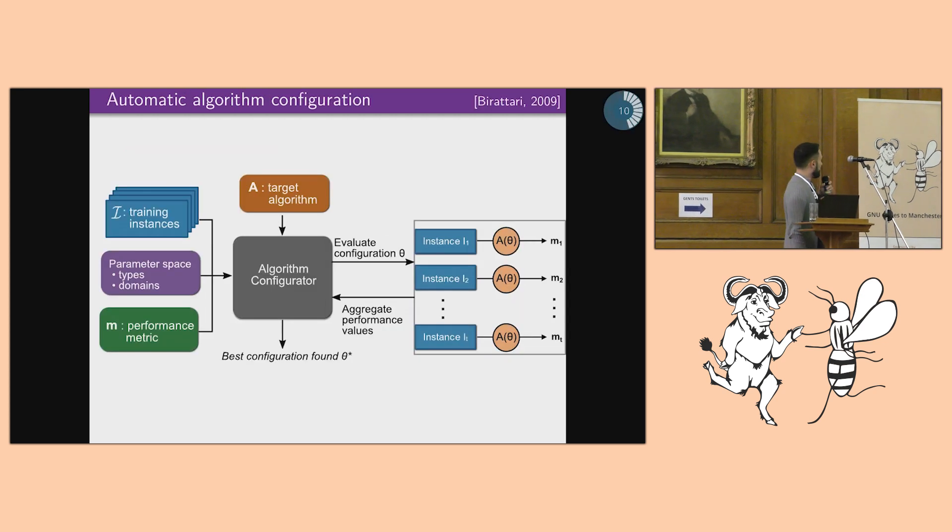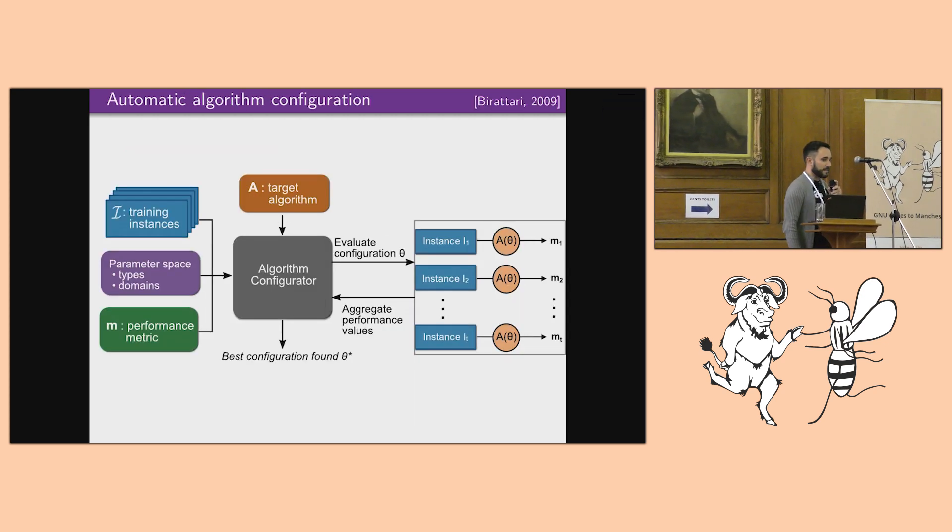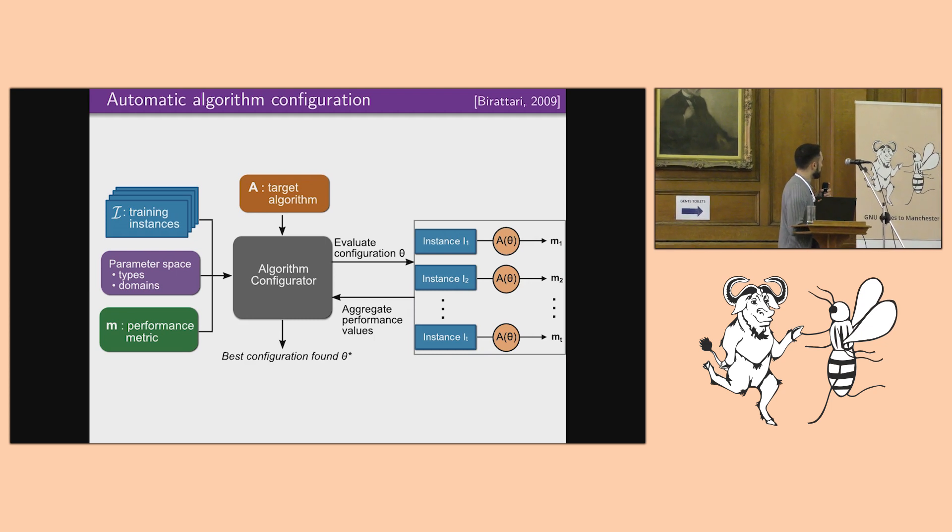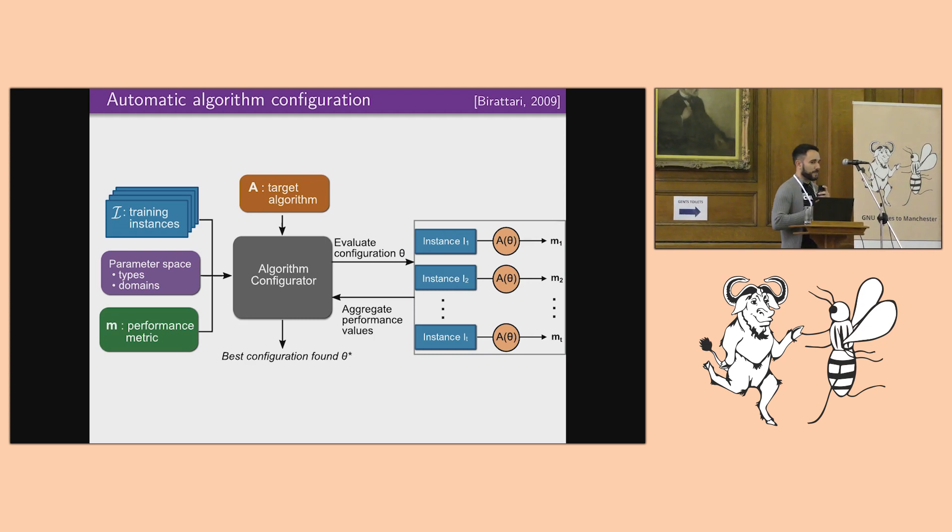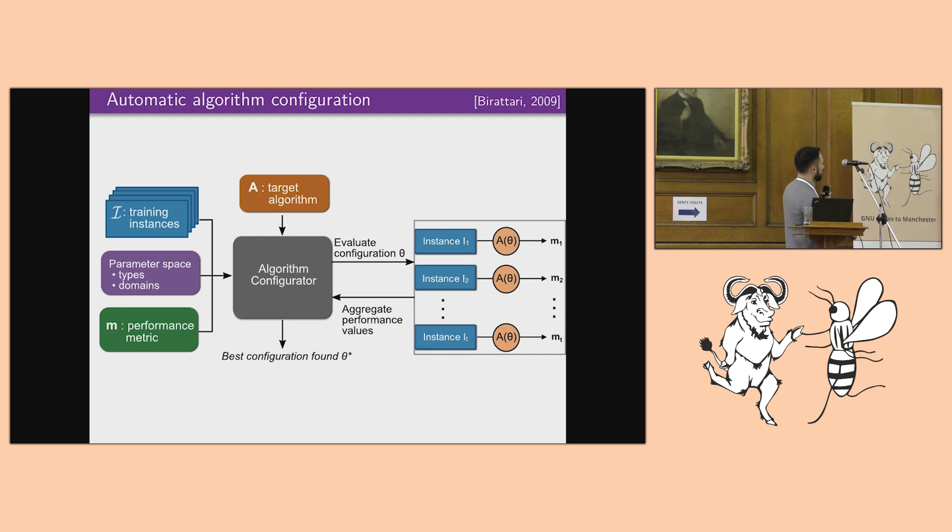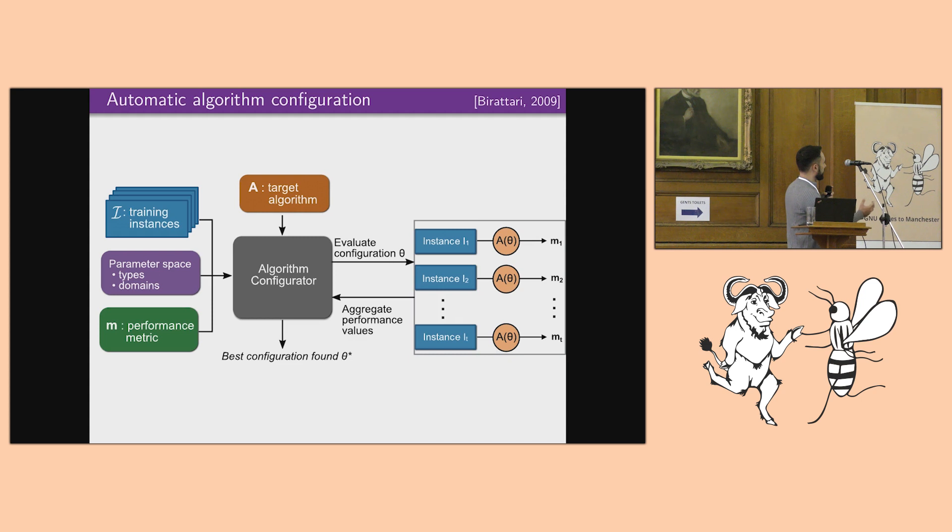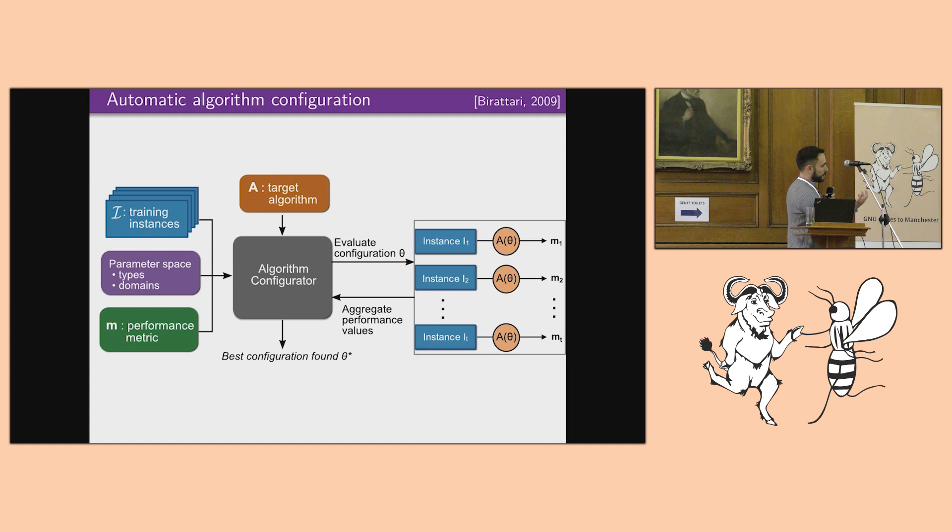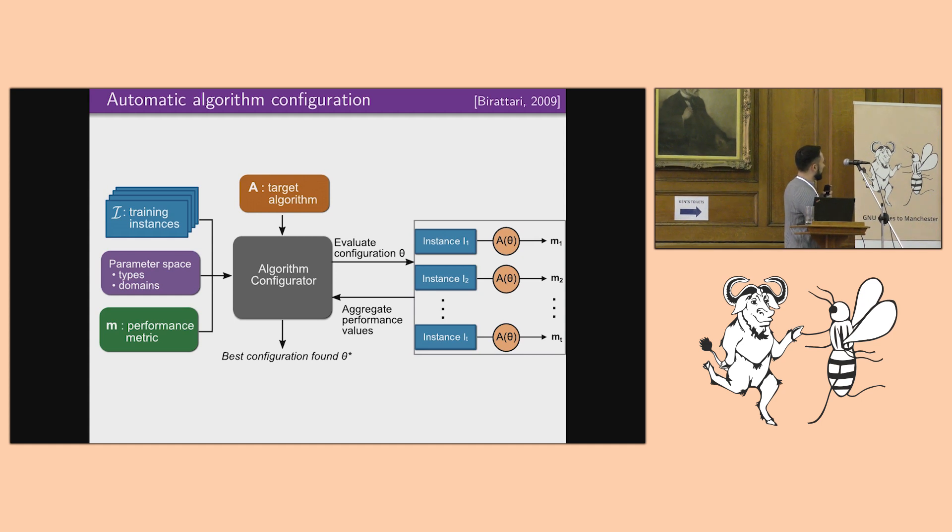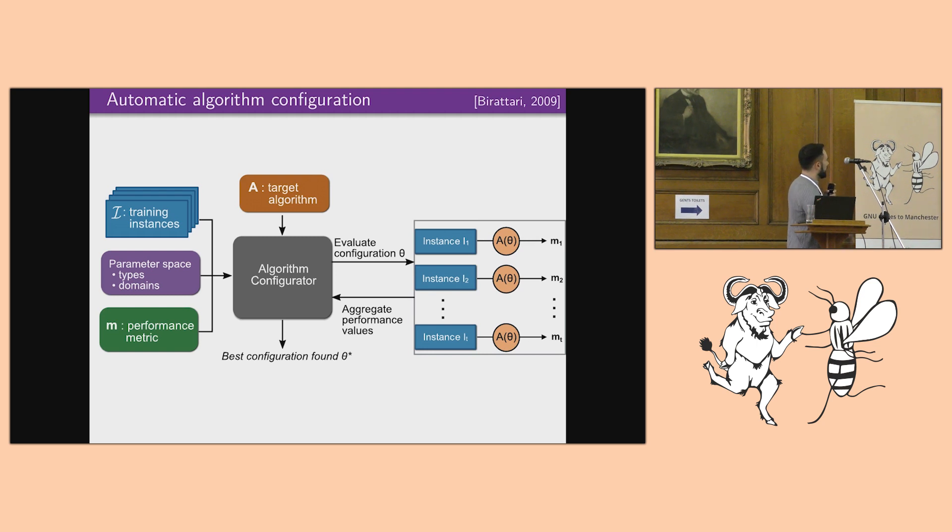So the general idea is that you have some training instances. As I say, random seeds, different inputs, workloads. You have a parameter space that defines your options, the type of the options, the ranges, and you have some kind of performance metric, the speedup of your algorithm. And you have a configurator that is going to evaluate configurations of the parameters by, in the case of GCC, compiling the input file and then running it on different instances, which is different random seeds or different inputs, and measuring the performance metric. And it's trying to find the best configuration.